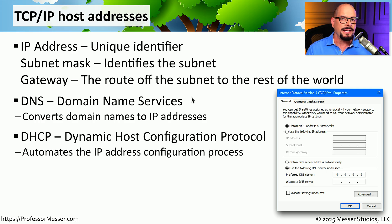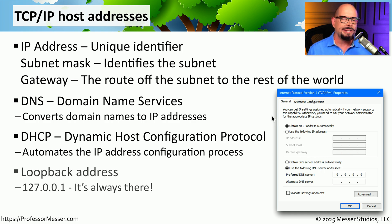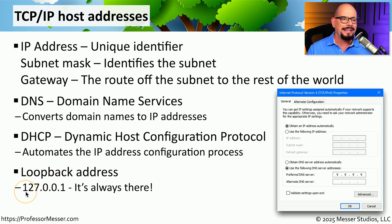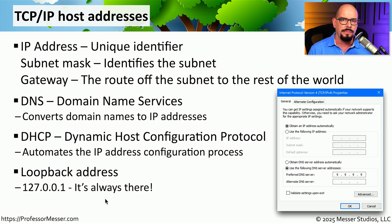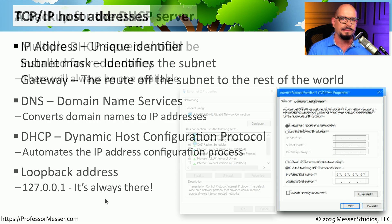Many devices will obtain all of this information from a centralized database of IP addresses called the DHCP server, or Dynamic Host Configuration Protocol server. One important address to know for IP version 4 is the loopback address. The loopback address is 127.0.0.1, although technically it's any IP address on that 127 network. This defines the internal IP address of your computer — it's on every single computer and is a way to confirm that the IP stack of your device is working properly.